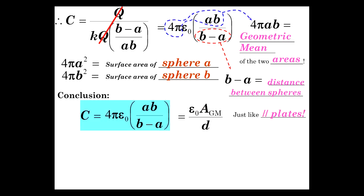And, that is epsilon 0 times the geometric mean of the area divided by the distance. And, that's the exact same form that the parallel plates had. So, that's good.